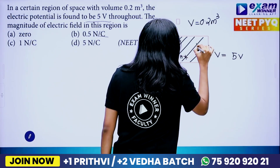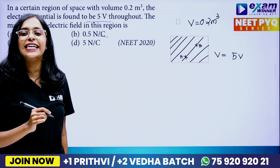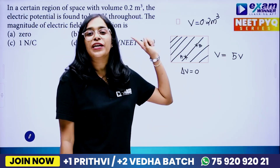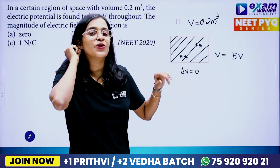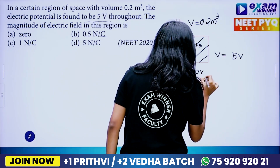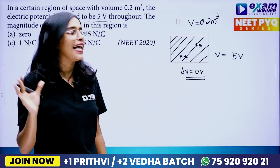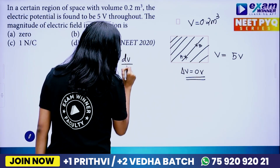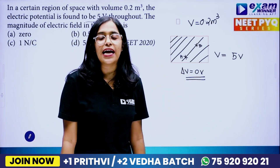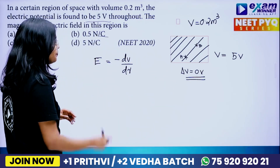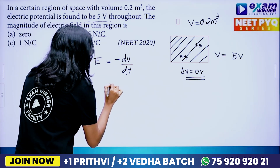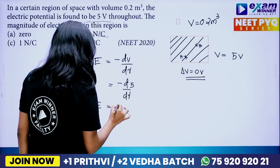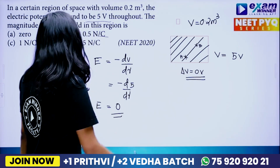We will consider two points, point A and point B. There is a potential difference delta V equal to 0, because point A equals 5V and point B equals 5V — the same. So delta V is equal to 0. The electric field is equal to minus dV by dr. Since the potential is constant throughout, the differential of a constant is zero, so electric field is equal to zero.